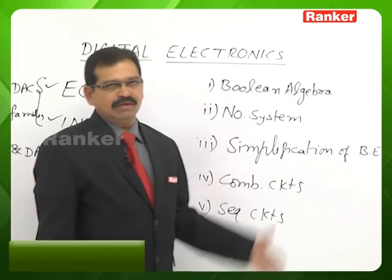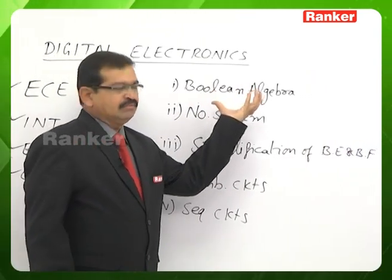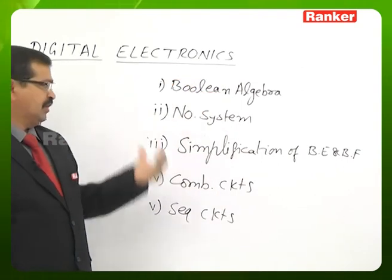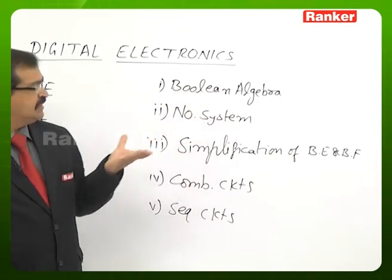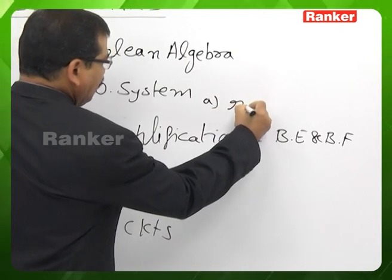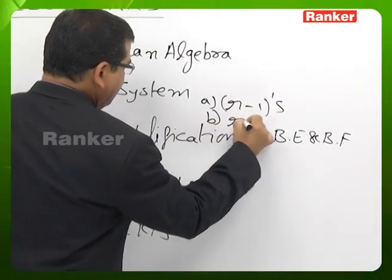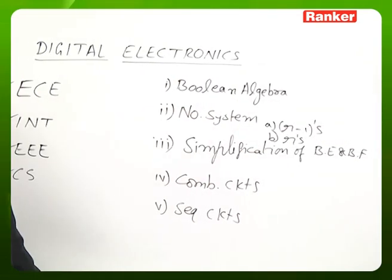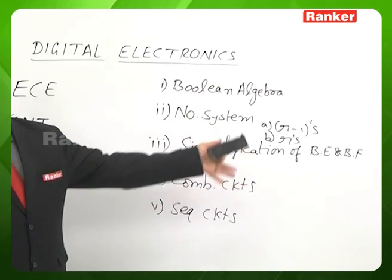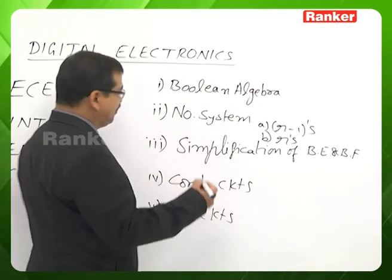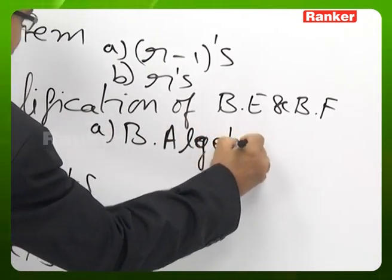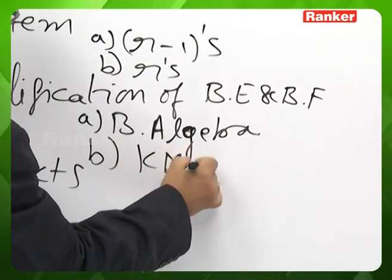In Boolean Algebra, we look at basic operators and derived operators relating Boolean variables. In the Number System, we concentrate on the binary number system, covering R-minus-1's complement and R's complement for any radix. For simplification of Boolean expressions and functions, we use Boolean Algebra properties and Karnaugh maps.